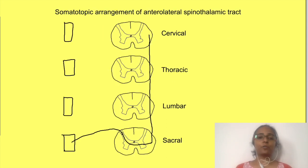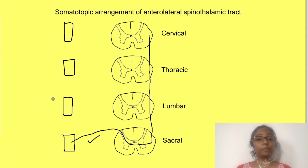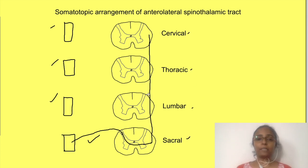To solve this question you should know how anterolateral spinothalamic tract fibers are arranged in the spinal cord. In the diagram, nerve fibers carrying sensation from one area of skin are shown. But how are fibers from multiple areas of skin arranged in the spinal cord? To understand this, we will look at pathways from four different regions of skin supplied by fibers of the sacral, lumbar, thoracic, and cervical regions of the spinal cord.